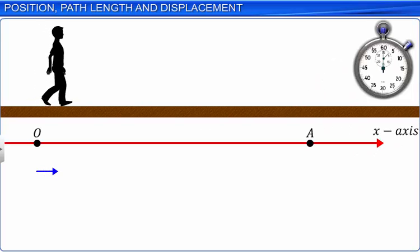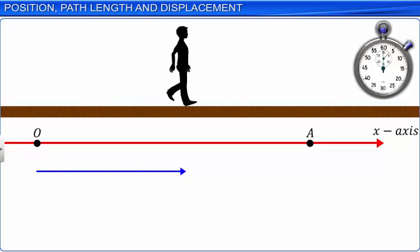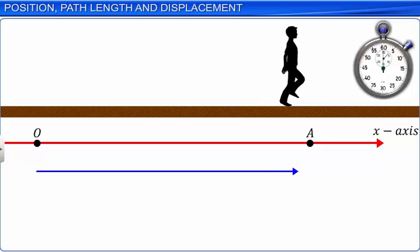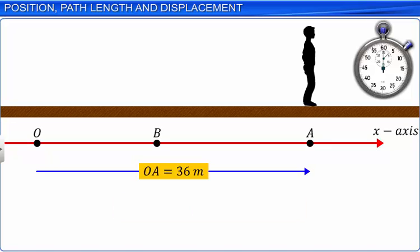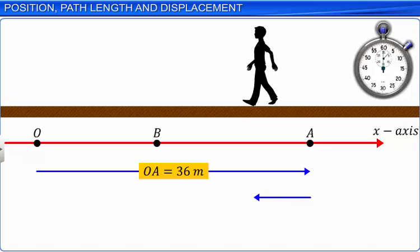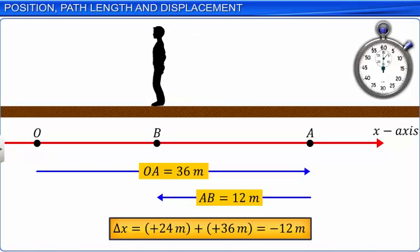For example, the displacement of the man moving from O to A: delta X is the difference between the final and initial points, which equals 36 meters. The displacement of the man moving from A to B is delta X, where delta X is the difference between 24 meters and 36 meters, which equals minus 12 meters.